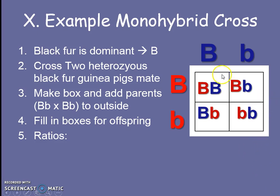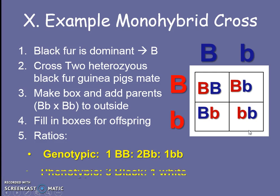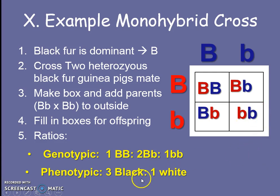Now I do my ratios. How many BB do I have? One. How many Bb's? Two. How many bb's? One. So my genotype ratio is 1 BB to 2 Bb to 1 bb. My phenotype ratio: the BB, the Bb, and the Bb are all going to be black guinea pigs because they all have at least one uppercase B. I only have one that could possibly be white. So the phenotype ratio is 3 black to 1 white — we can write these as ratios or percentages. We will practice a ton in class and even do some tougher word problems. Great job, guys.